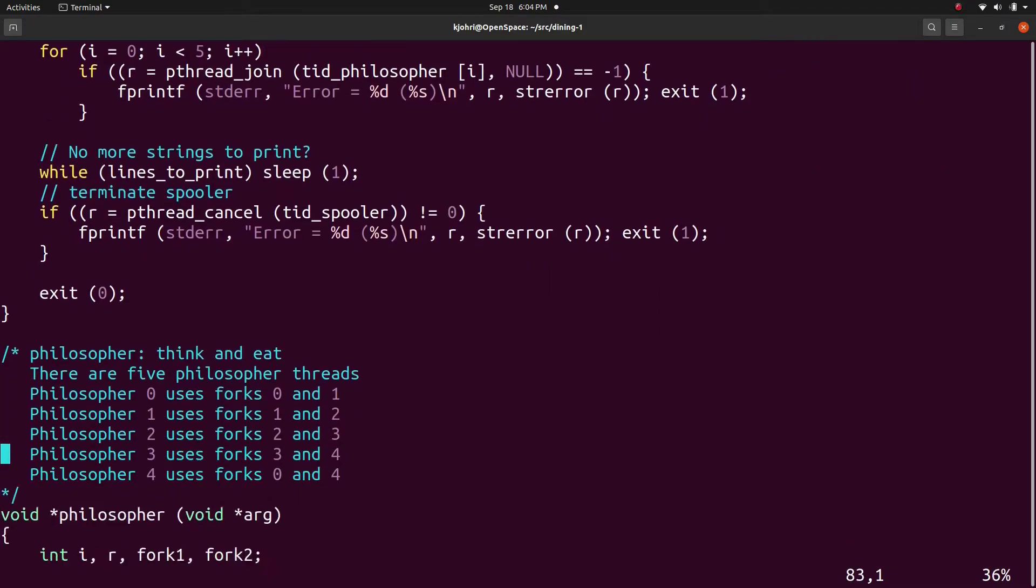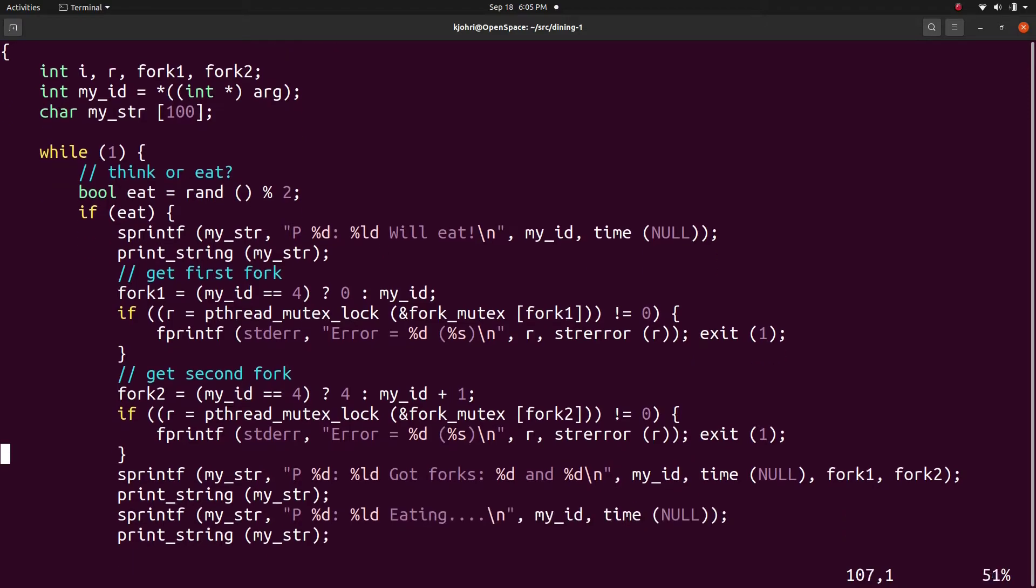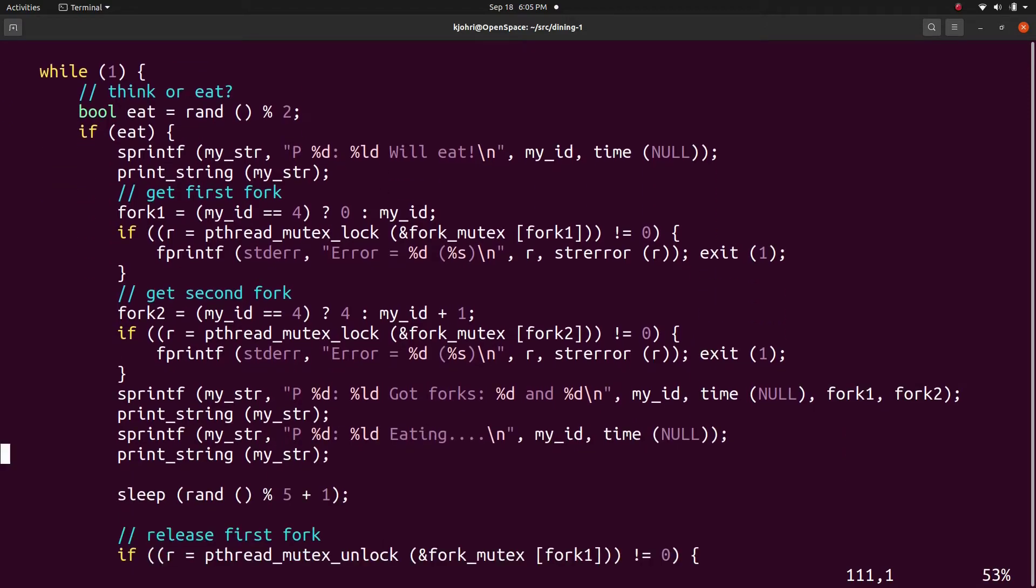Now this is the philosopher thread. We have five such threads and each philosopher is an infinite loop. In the loop, the philosopher decides whether to eat or think.